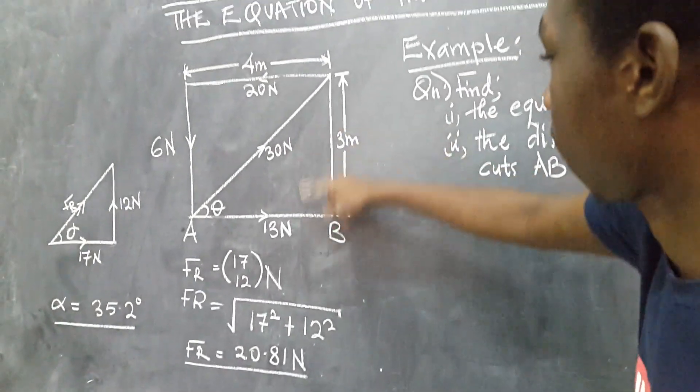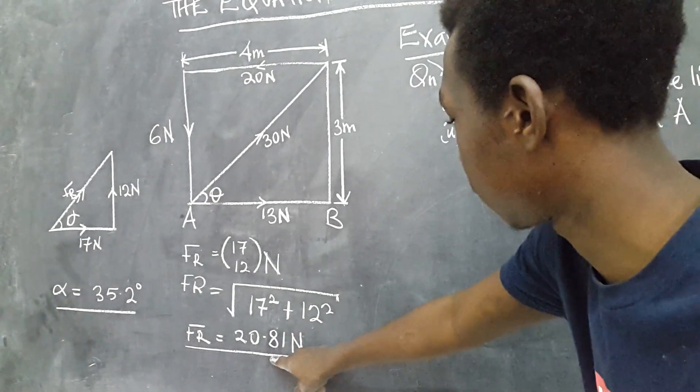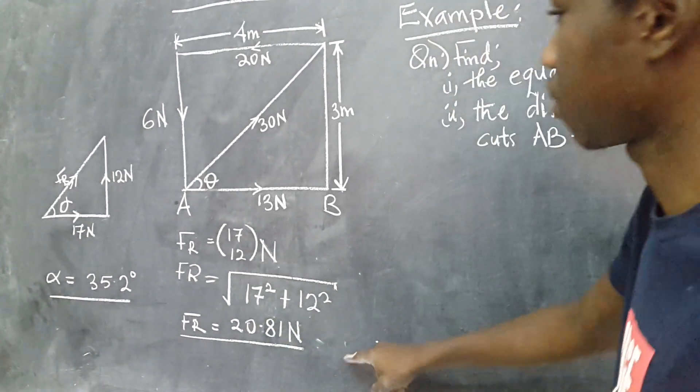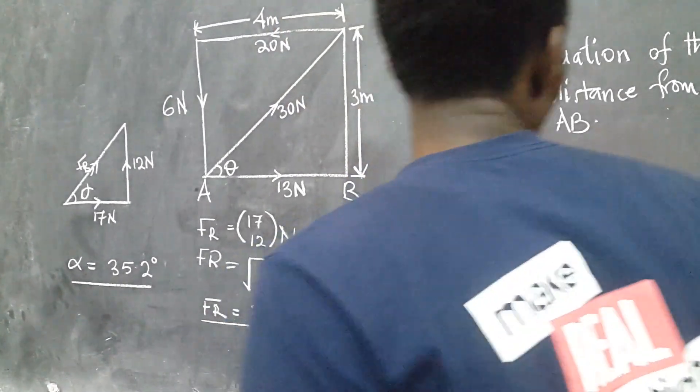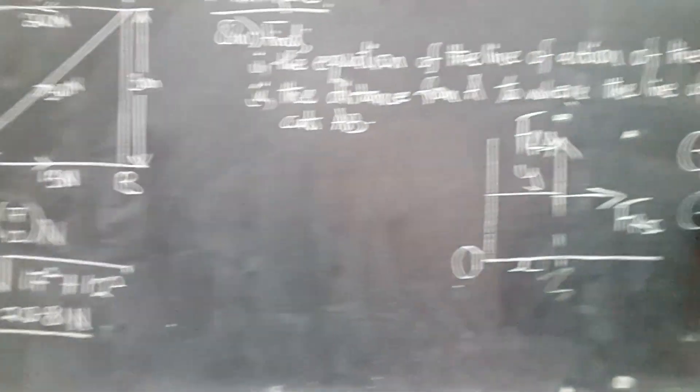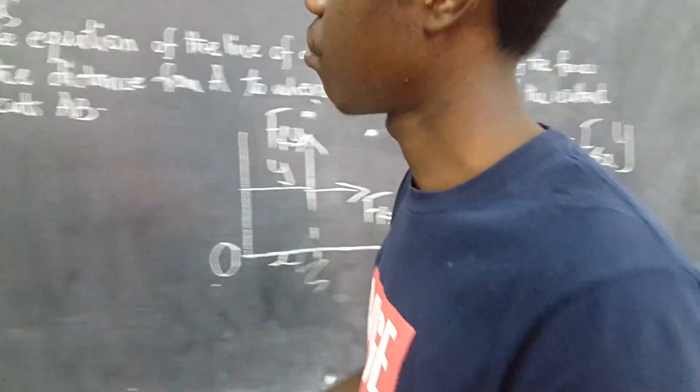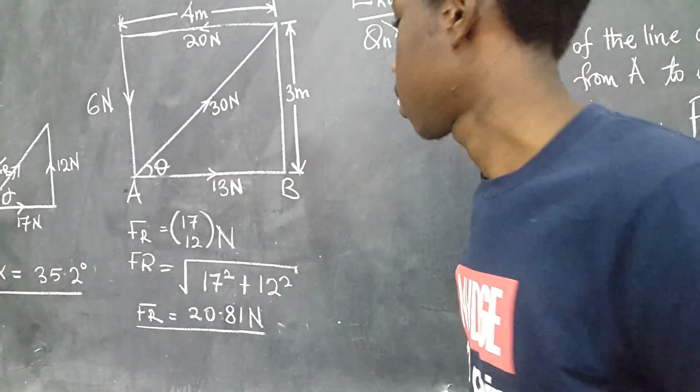So now, in this example, we found the resultant force of this coplanar force system as 17 and 12 and this modulus was 20.81 newtons and it was acting at an angle of 35.2 degrees to the horizontal.